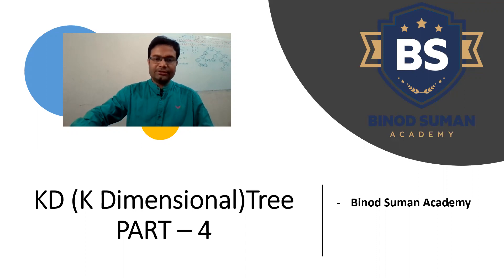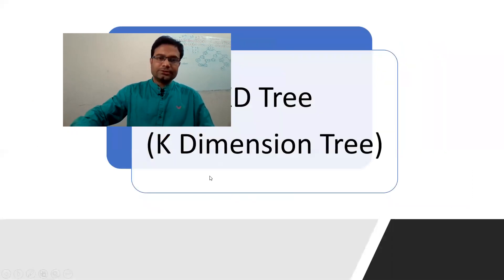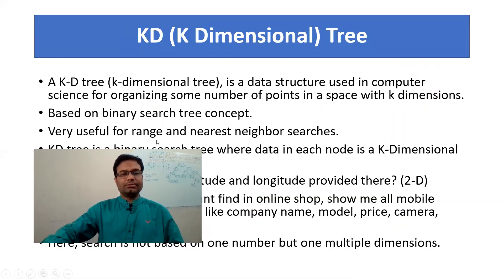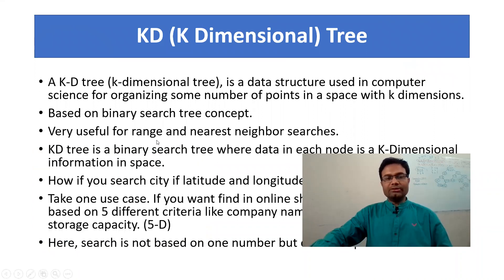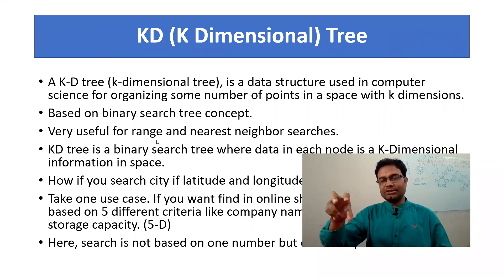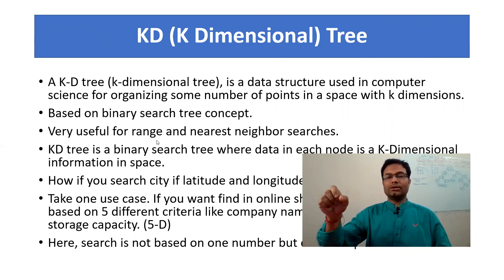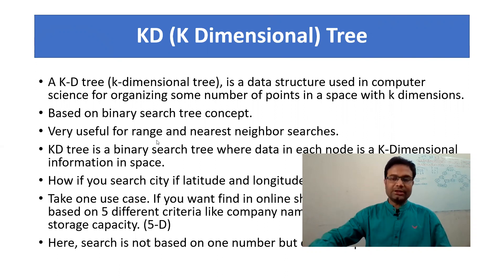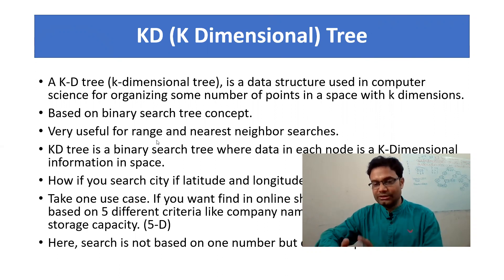So what is the KD Tree and when is it going to be used? As you have seen in the binary search tree, we always use one number — 5, 6, 7, 8 — each node has one number. This is called 1D. You can consider BST as 1D. Suppose if you have 2 data — x, y, z — in one node, if you have 3 data — x, y, z — how do you construct the tree with this kind of data?